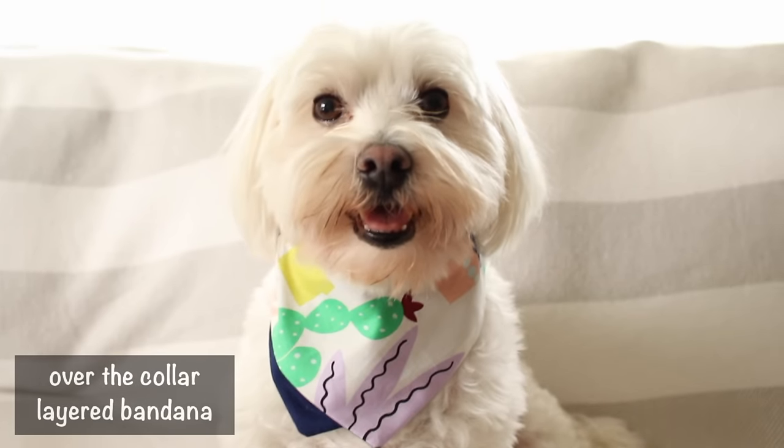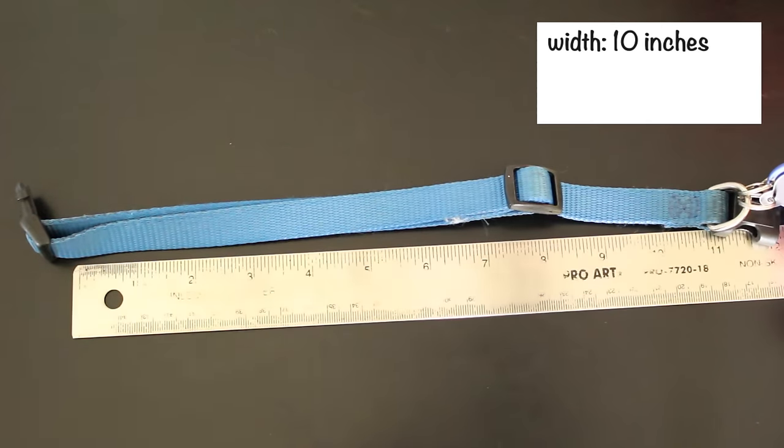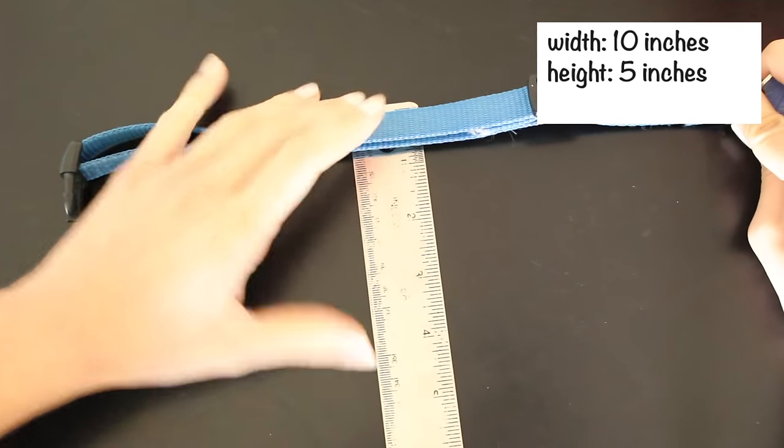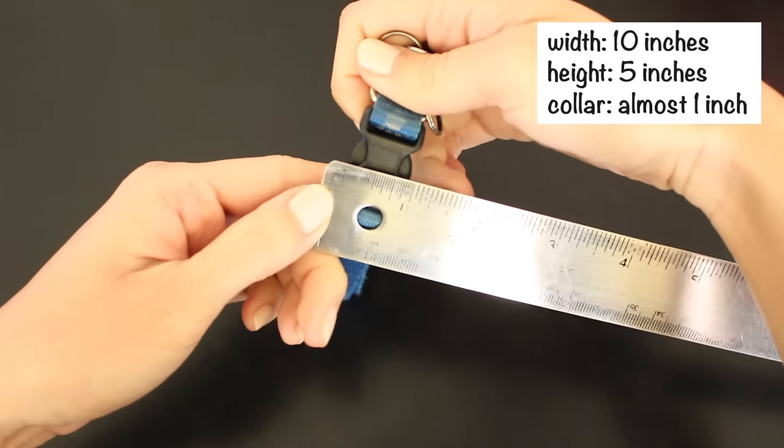For the over the collar version, measure how much of the collar you want covered, the height you want, and the width of the largest part of the collar.